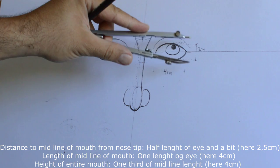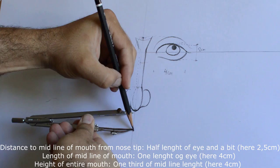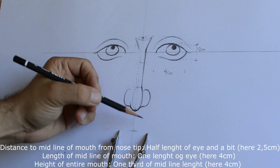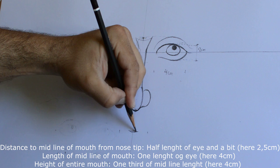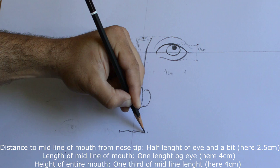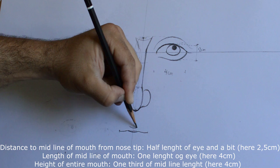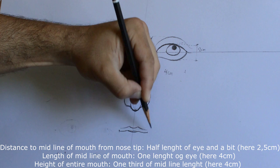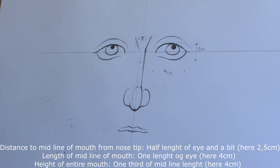Anyway, so I measure again two centimeters, half the length of my eye, and I mark the place where the midline of my nose will be painted. The length of the mouth is the same as the length of the eye. I draw my upper lip and then I draw also my lower lip.